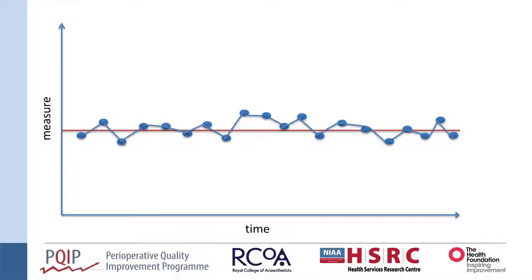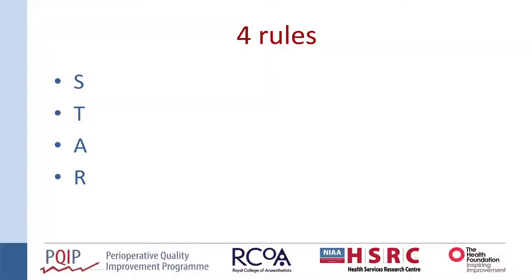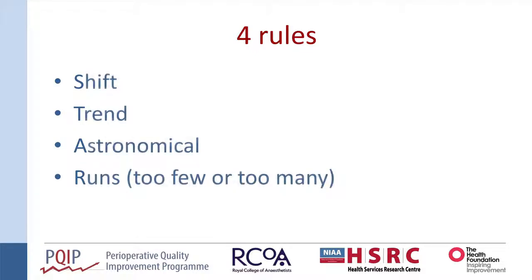Here's my data and it's looking pretty random — the data points are flicking back and forth across the median line. But how do we know that for sure? Here are the four simple rules of run chart analysis. I like a good acronym, so I've made one called STAR. The first three rules are very intuitive, and the last one needs a little bit more explaining, but again it's quite straightforward.